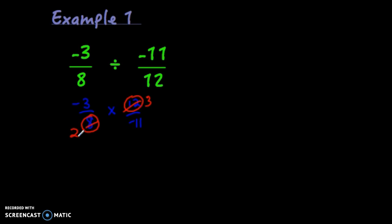Now I'm going to multiply straight across. So negative 3 times 3, negative 9. 2 times negative 11, negative 22.